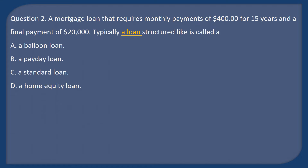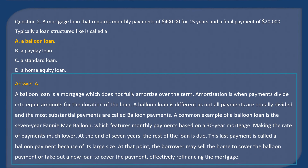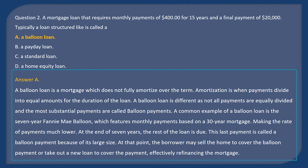Question 2: A mortgage loan that requires monthly payments of $400 for fifteen years and a final payment of $20,000 — typically a loan structure like this is called: A. A balloon loan. B. A payday loan. C. A standard loan. D. A home equity loan. Answer: A. A balloon loan is a mortgage which does not fully amortize over the term. Amortization is when payments are divided into equal amounts for the duration of the loan.